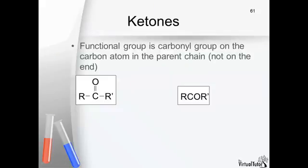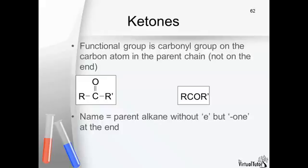This is the general condensed structural formula of a ketone. When naming a ketone, we modify the name of the parent alkane molecule by writing ON at the end, instead of an E.